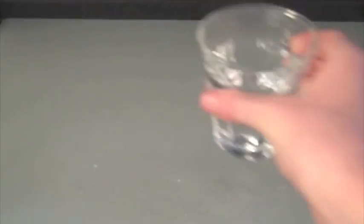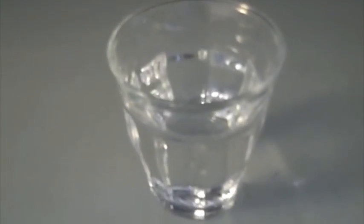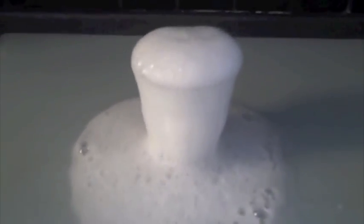First, put some vinegar in a cup. Now measure out some baking soda and pour it in. Immediately foaming will start to happen. These bubbles are also carbon dioxide, like in the egg experiment.